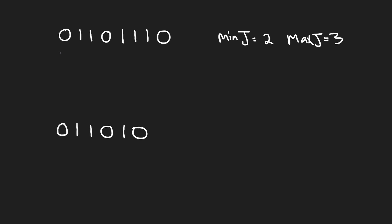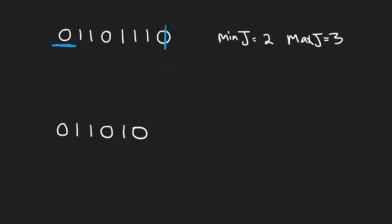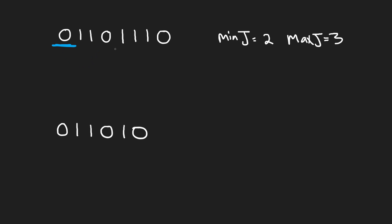Let's look at a couple of different examples. In both examples, the minimum jump is 2 and the maximum jump is 3. We're starting at index 0, which is always going to be a zero. Note that the end position might not be a zero — if it's a one we return false, if it's a zero it's technically possible. From position 0, we can jump a distance of 2 or 3, giving us the next frontier for our BFS.